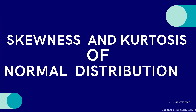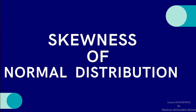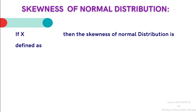We shall start with the skewness of normal distribution. We know that skewness means the lack of symmetry of a distribution. In this property we will check the symmetry of normal distribution. If X follows a normal distribution with parameters mu and sigma squared, then the coefficient of skewness is denoted by beta 1, which is equal to mu 3 squared divided by mu 2 cubed.